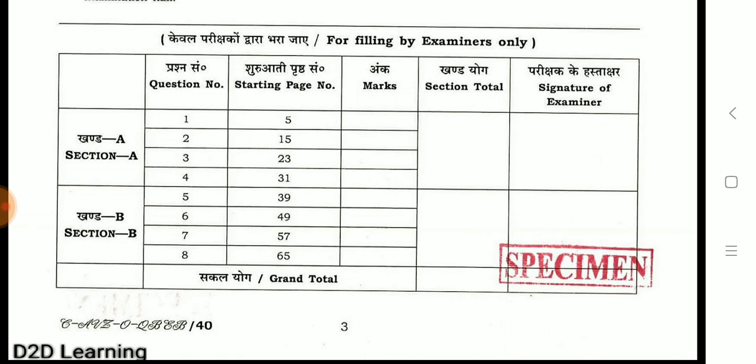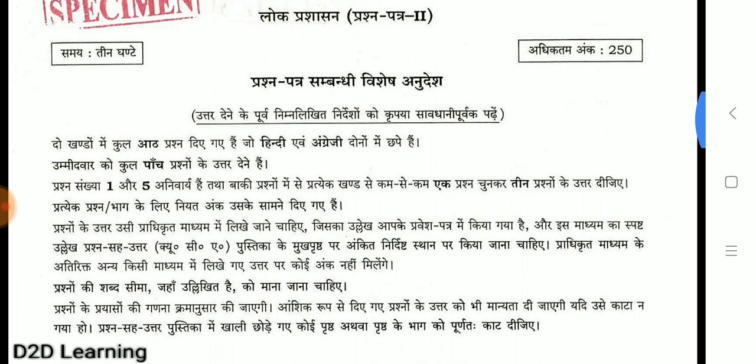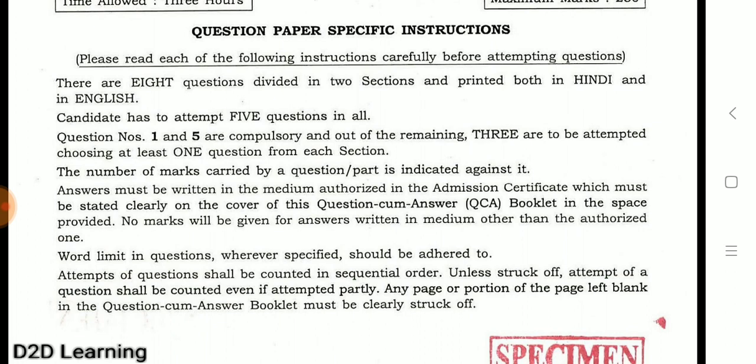There will be 8 questions divided into 2 parts. The first and fifth questions are compulsory; the other three questions you must choose. In the QCA booklet, you can apply the medium of your choice for the exam. If you have Tamil as your option, you can use Tamil. If you want English, you can use English, or you can use all the scheduled languages.